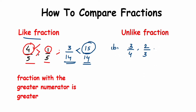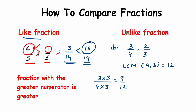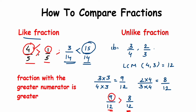The LCM of 4 and 3 is 12. For 3/4, multiply both numerator and denominator by 3 to get 9/12. For 2/3, multiply both by 4 to get 8/12. Now 9/12 and 8/12 are equivalent fractions with the same denominator. Comparing the numerators, 9 is greater than 8, so 9/12 — which equals 3/4 — is greater than 8/12, which equals 2/3.